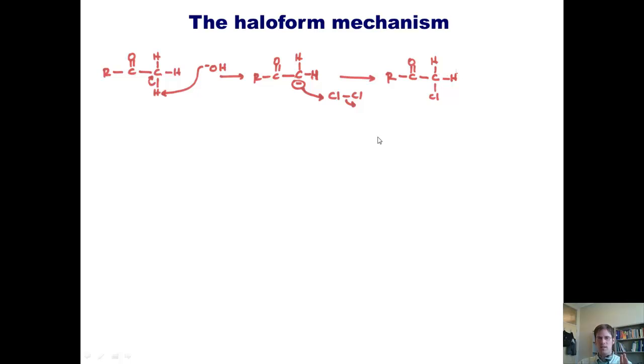And the reaction does not stop here. The hydroxide then strips off a second alpha hydrogen to give me this intermediate. This intermediate then looks at our excess halogen, attacks one of those, kicks off the other, and gives me now a dichlorinated species.